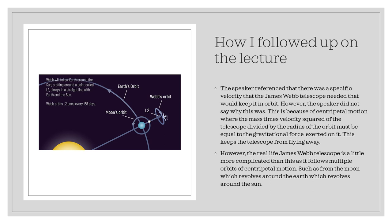However, in real life, seen by that diagram on the left, the James Webb Telescope is a little more complicated than this in its orbit, as it follows multiple orbits of centripetal motion, such as the moon revolves around the Earth, which revolves around the sun. But overall, in total, the James Webb Telescope is orbiting around the sun.